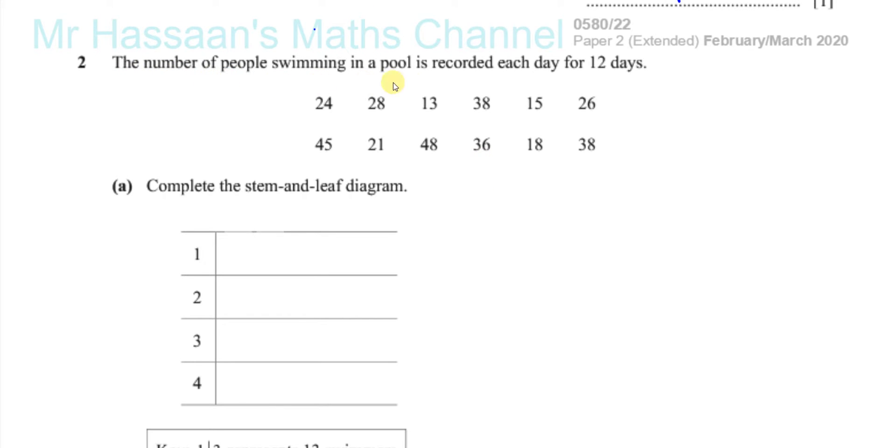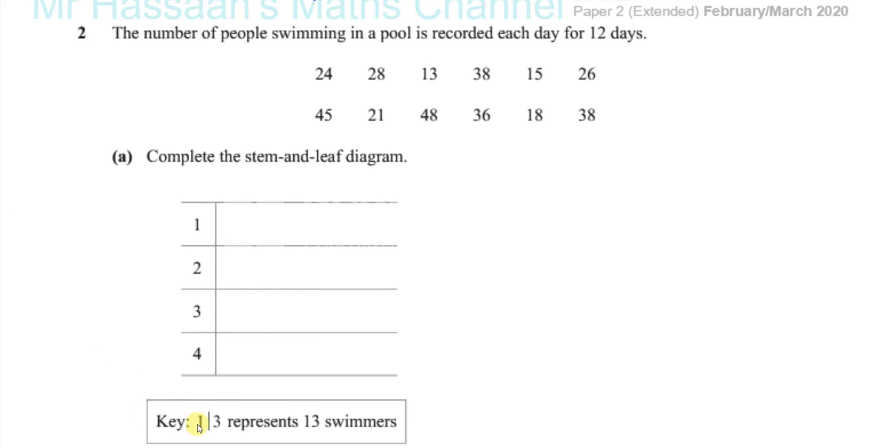The number of people swimming in a pool is recorded each day for 12 days. So those are the numbers for each day for 12 days. Complete the stem and leaf diagram. Now a stem and leaf diagram must have a key, and the key is given over here.